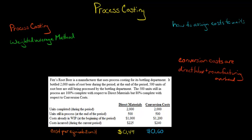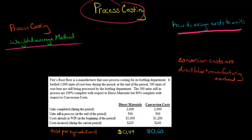In this video, I want to show you an example of how to assign cost to units for a company that uses process costing, specifically the weighted average method. So let's take a company called Fitz's Root Beer — they're a manufacturer, and they use process costing for their bottling department.